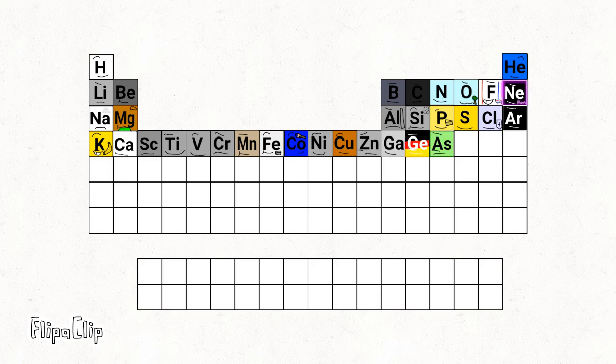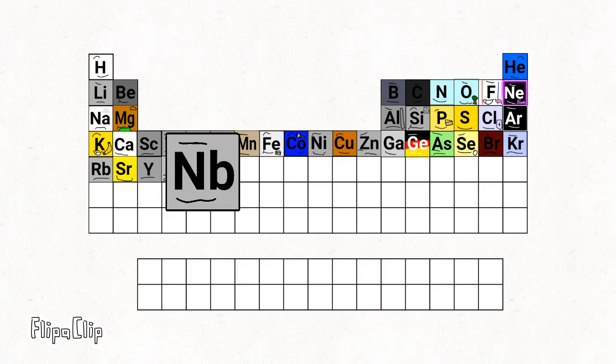And then there's gallium, germanium, and arsenic, selenium, and bromine, and then krypton, and rubidium, and strontium, and yttrium, zirconium, niobium.